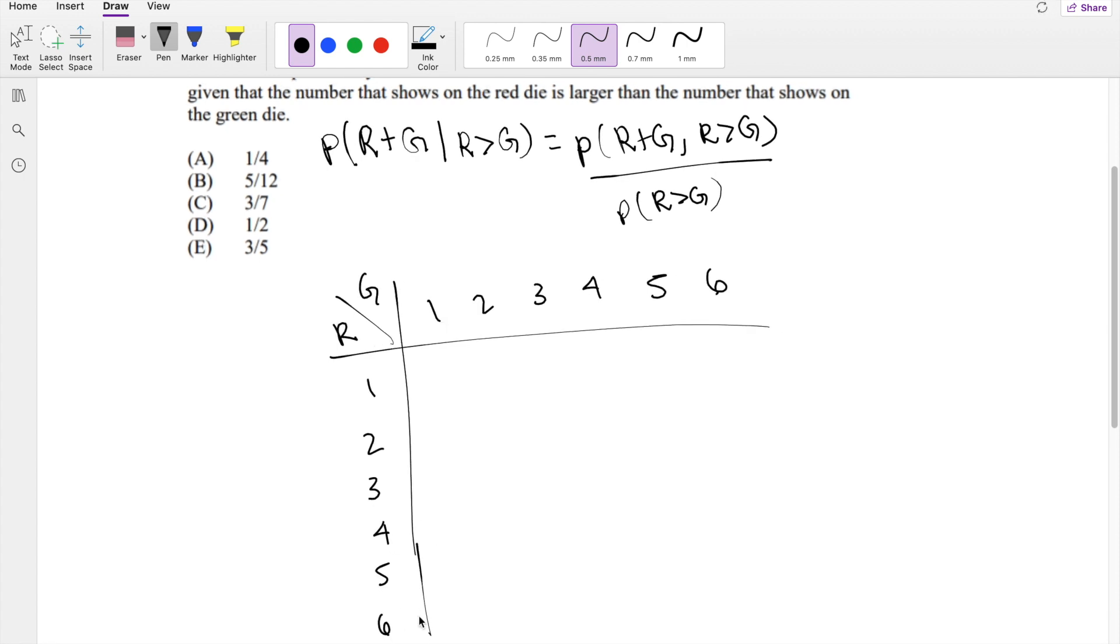So then what is the probability that R is greater than G? Okay, so let's see here. Is 1 greater than 1? Nope. Is 2 greater than 1? Yep. Is 3 greater than 1? Yep. So these ones are all okay. How about this one? Is 2 greater than 2? Nope. Is 3 greater than 2? Yes. So we can keep going down like that. Is 3 greater than 3? No, but 4 is definitely greater than 3. So these ones are okay.